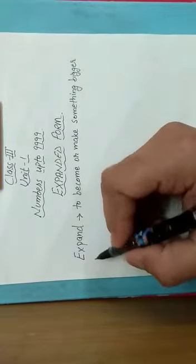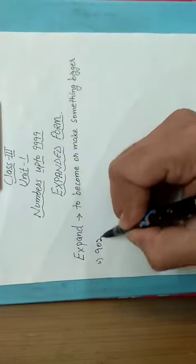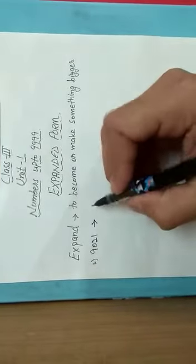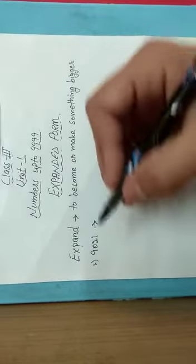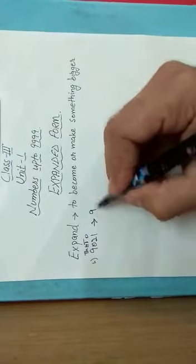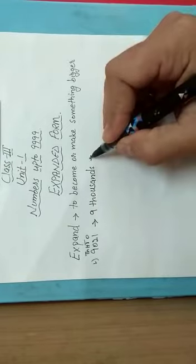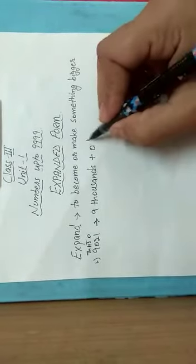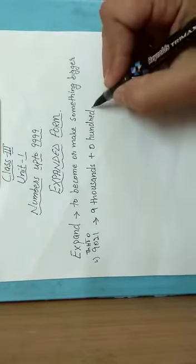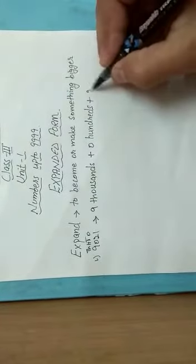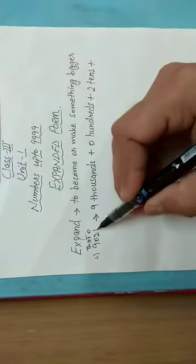Let us take some examples. So first example: 9021. We will expand the number in two ways. We will start writing the place value of each digit starting from 9. Nine is at the thousands place, so we will write 9 thousands. Then we put a plus sign after every digit. Zero is at the hundreds place, so we will write 0 hundreds.